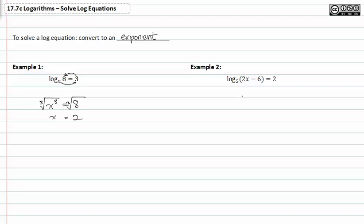In example two, we have a base of five raised to the second power and it's equal to what the log is of. So five to the second is equal to two x minus six.